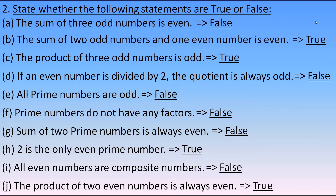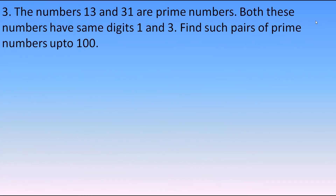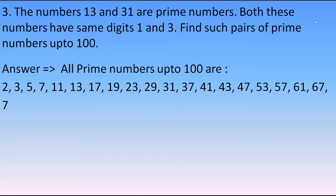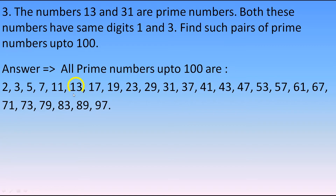Now let's move to the third question: the numbers 13 and 31 are prime numbers — both have the same digits 1 and 3. Find such pairs of prime numbers up to 100. Writing all prime numbers up to 100, we check two-digit numbers starting from 11. 13 and 31 are already given. Moving to 17 — we also have 71, so 17 and 71 form a pair.